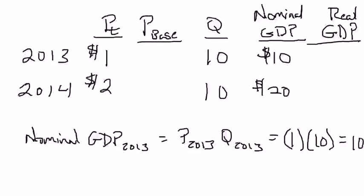Nominal GDP in 2013 — technically, think of nominal GDP as defined as the value of goods and services produced using prices from the current year. The price of an apple in 2013 is $1, and the quantity of apples is 10. So nominal GDP for 2013 is 1 times 10, which equals $10. If I do this calculation for 2014, nominal GDP equals $2 times 10 apples equals $20. So the size of the economy doubles even though the quantities remain the same. That was the problem.